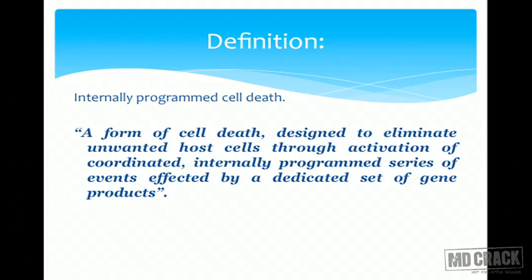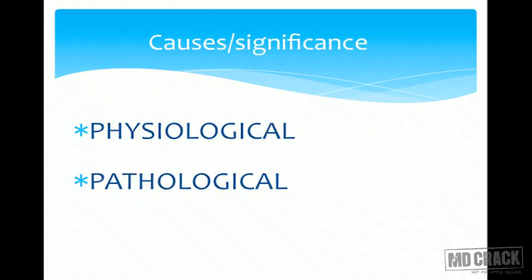Apoptosis is a form of cell death designed to eliminate unwanted cells in the body through an activated, coordinated, and internally programmed series of events, effected by a dedicated set of gene products. There are plenty of genes that control this apoptotic phenomenon. Remember: necrosis is always pathological, whereas apoptosis can be both physiological as well as pathological.